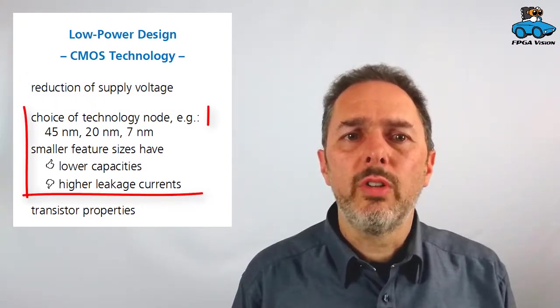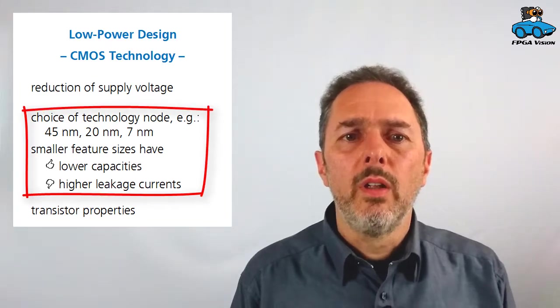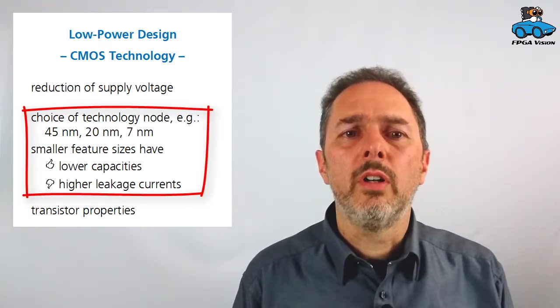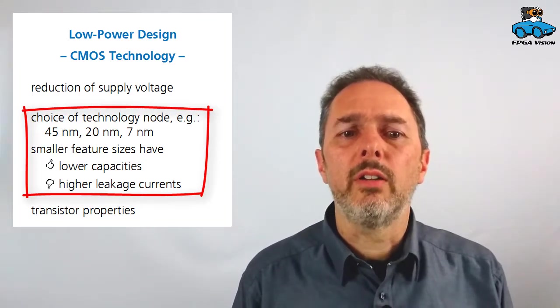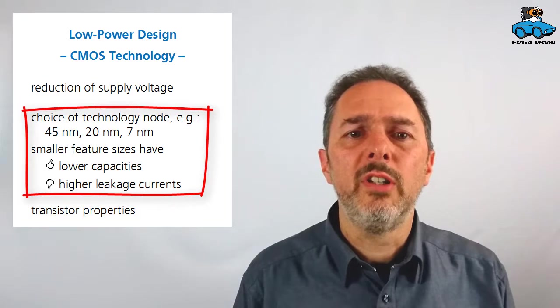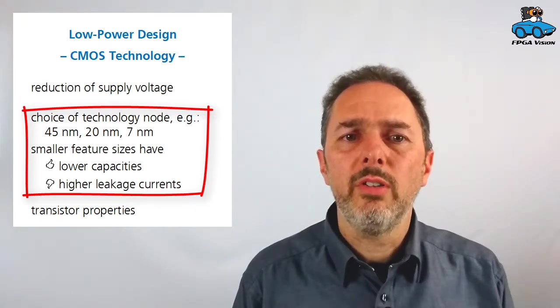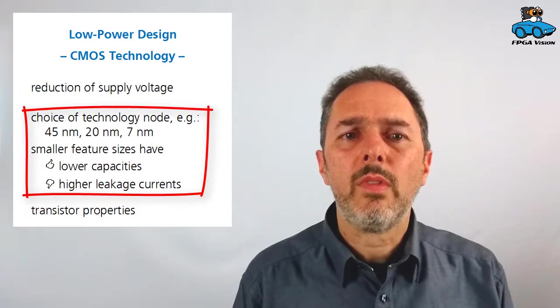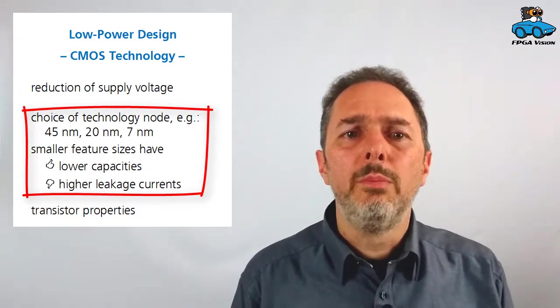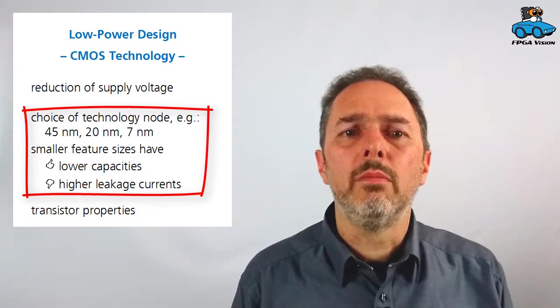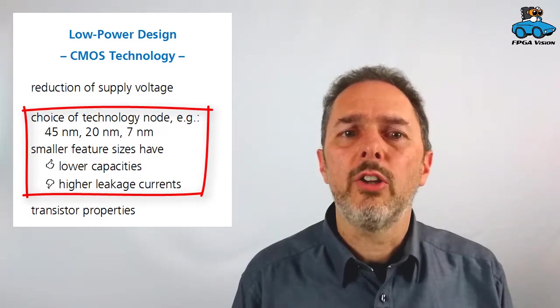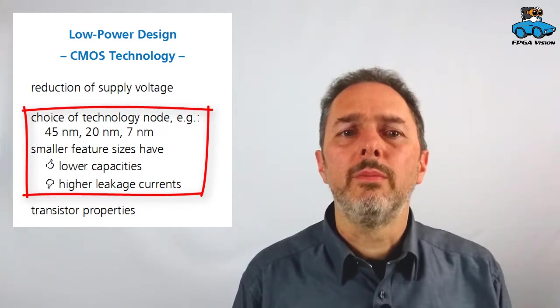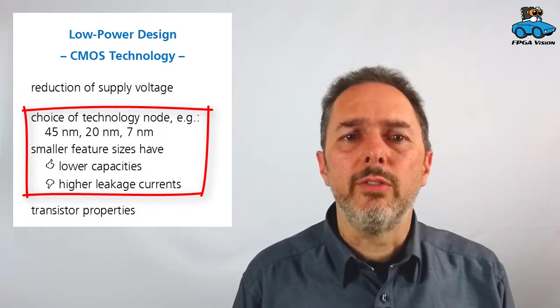We can use the CMOS technology. There are smaller feature sizes which have an advantage, because for technologies like 20 nanometers or 7 nanometers, we have smaller geometries, which means smaller capacities for internal nodes. However, there is a drawback, because these advanced technologies have higher leakage currents than, let's say, a 45 nanometer transistor. So there is a trade-off.